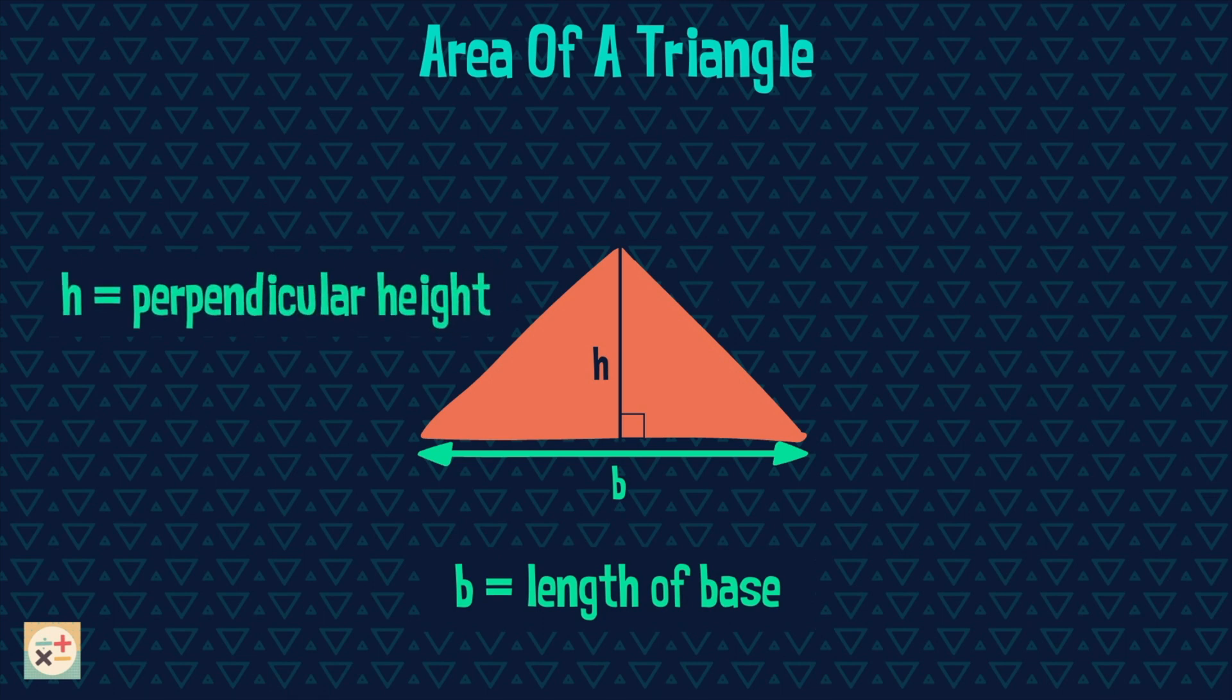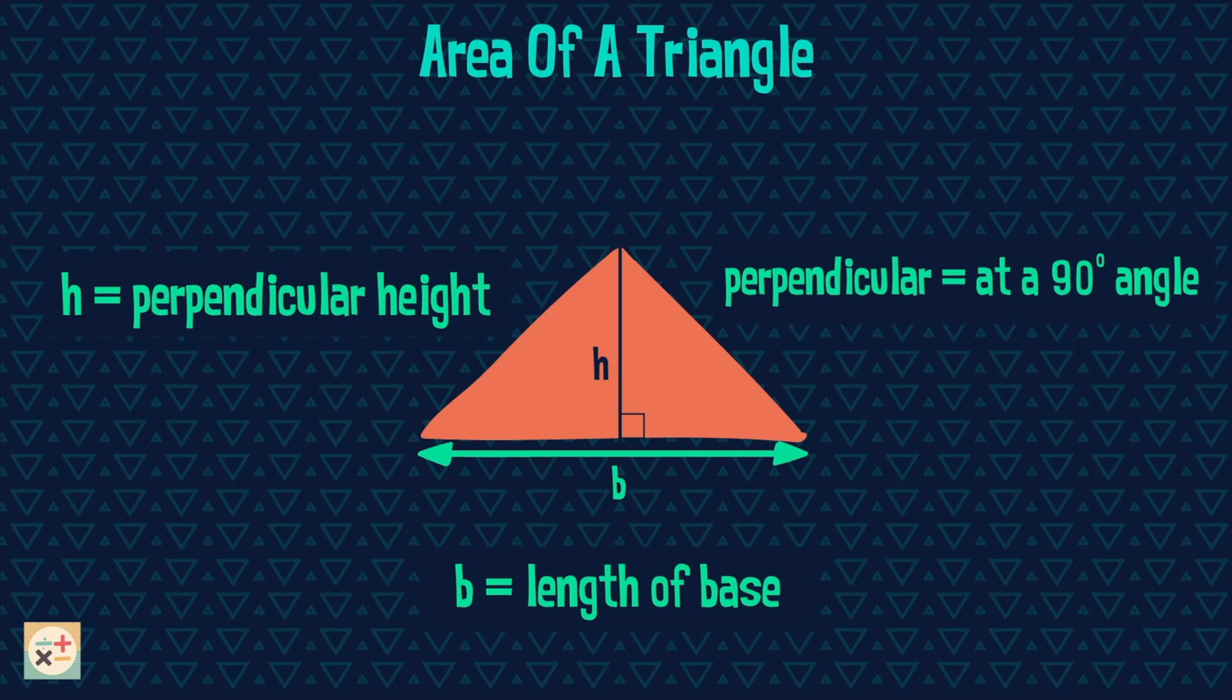Notice that the height is not a length of one of the sides. It is the perpendicular height, in other words the vertical height of the triangle. This means the height is measured from the base at a right angle.